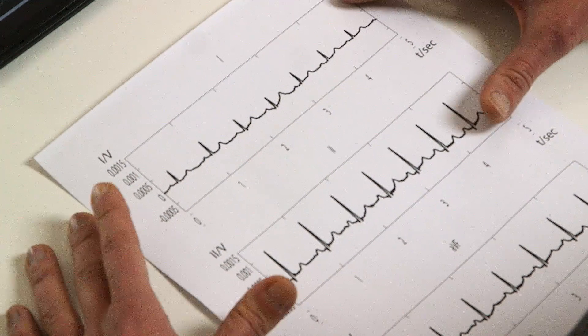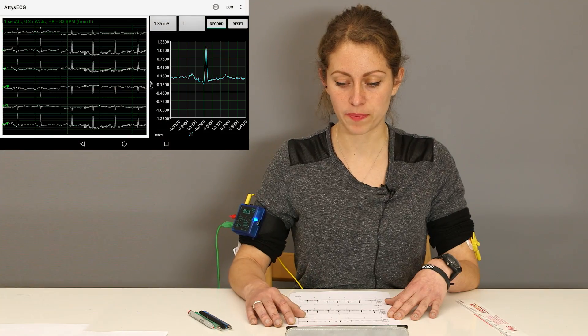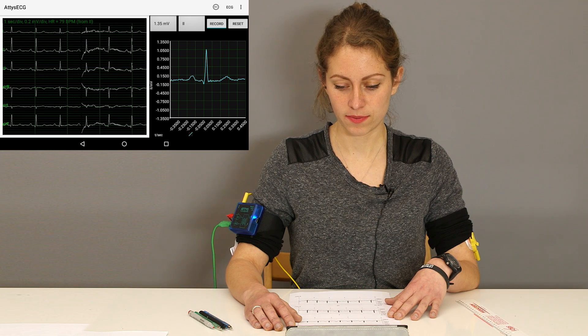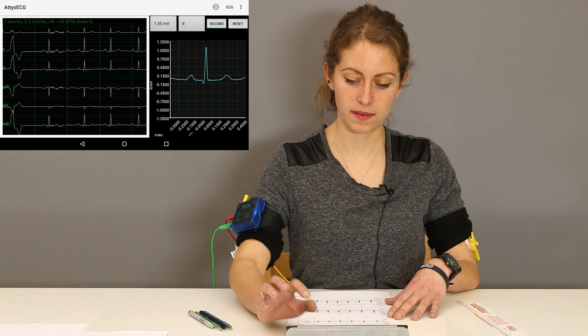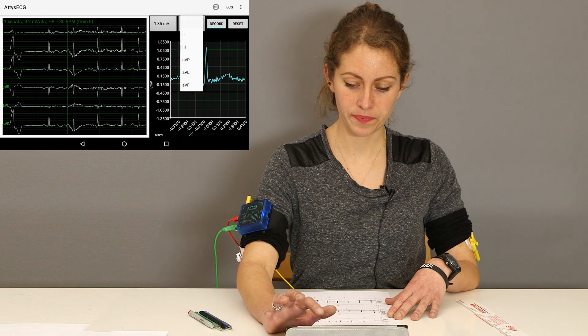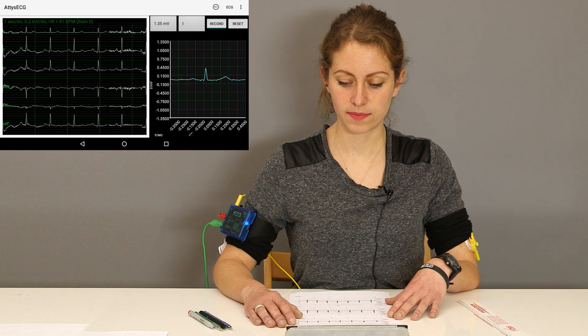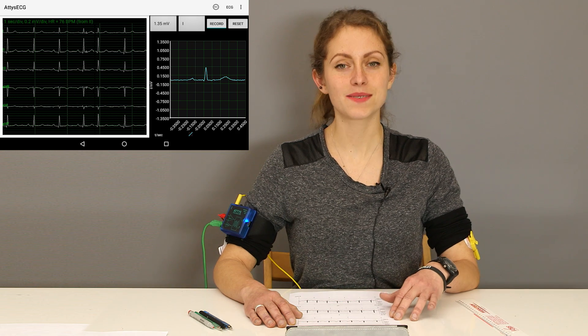Here is a printout of my ECG which you can also see running in the background. Here we have Eindhoven 2 and Eindhoven 1. There it is, nice and clear.